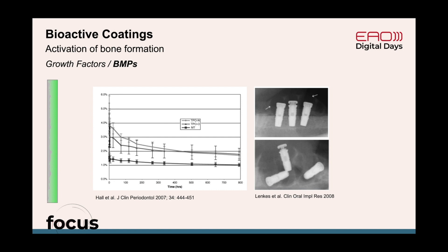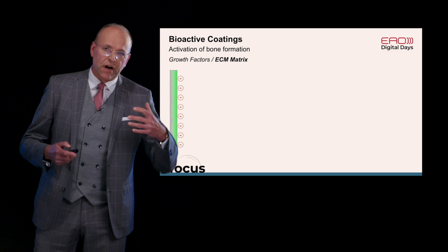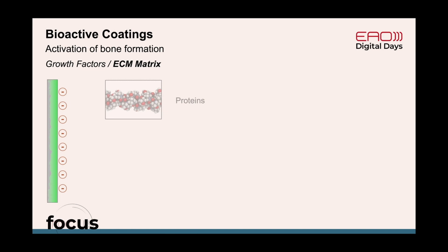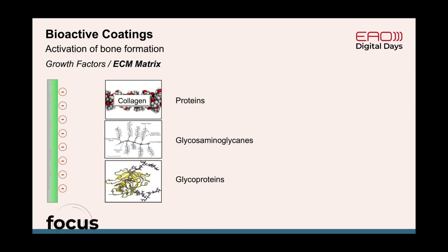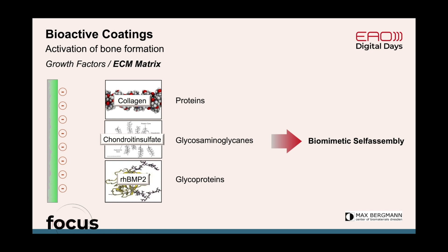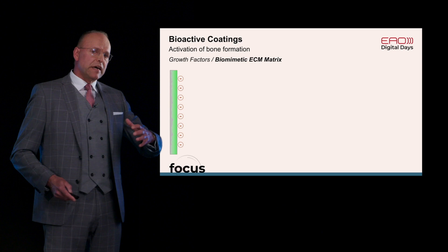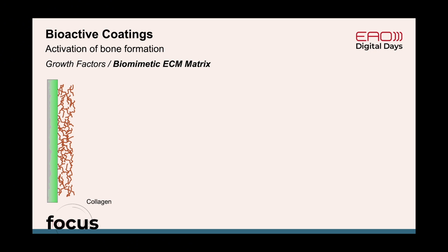One of the possible avenues is to use extracellular matrix, because extracellular matrix is the environment where growth factors are usually found in the living body. Extracellular matrix is composed of proteins, glycosaminoglycans, and glycoproteins. We used this approach in a kind of self-assembly process, together with the Max Bergmann Center in Dresden. We used collagen as the protein component, chondroitin sulfate as the glycosaminoglycan component, and BMP as the glycoprotein component — what we call a biomimetic self-assembly coating. This is quite easy to accomplish because collagen is a weakly cationic molecule that nicely adsorbs to the titanium surface, the chondroitin sulfate associates to that, and finally the BMP is added.